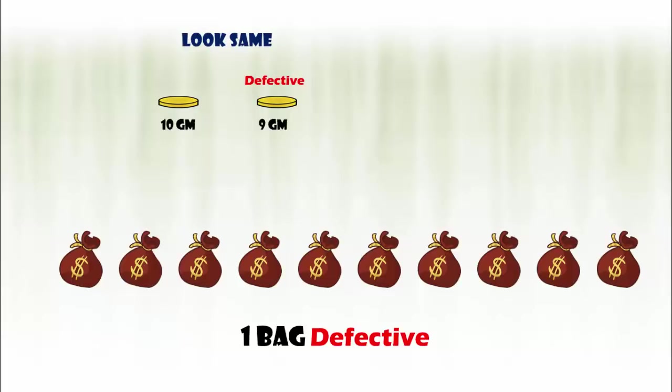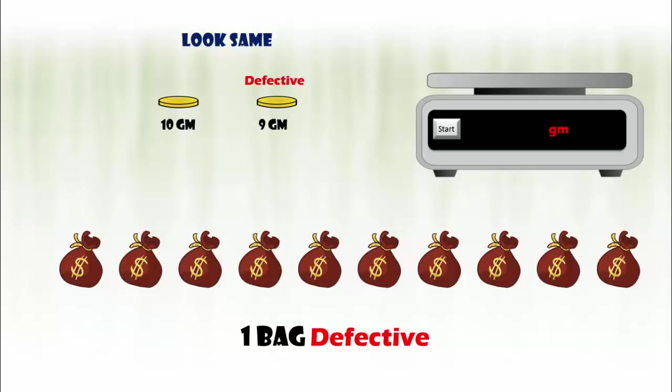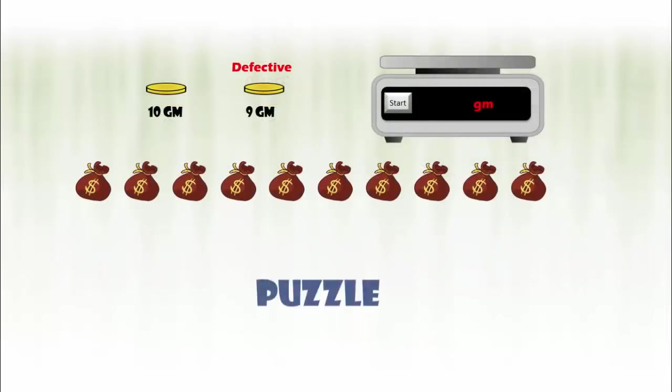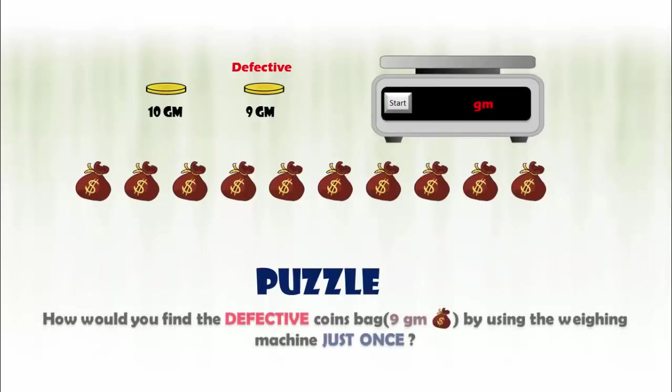Your task is to identify the defective bag with the help of a weighing machine that shows the exact weight in grams. But the challenge is that you have only one chance to use this weighing machine to display the weight. How would you find the defective coin's bag by using the weighing machine just a single time?